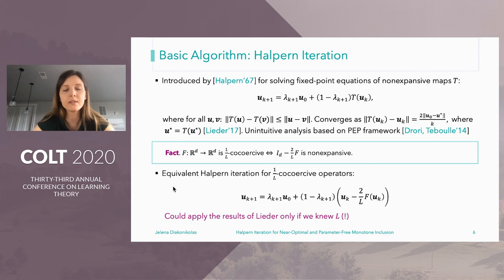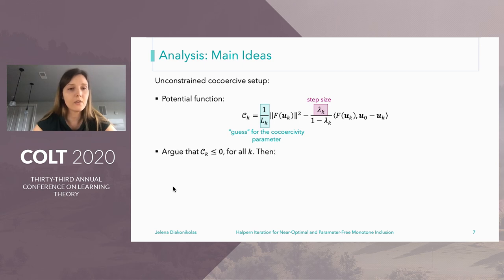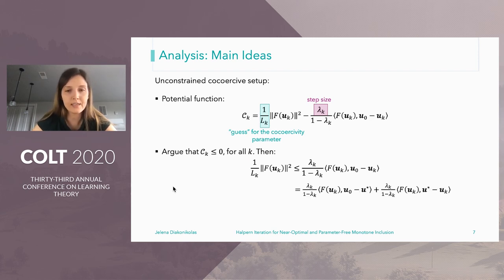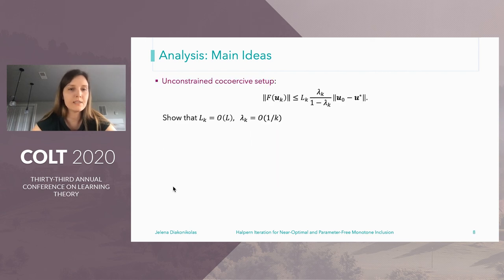To get a parameter-free method, we introduce a new analysis based on a new potential function, where L_k is our current guess in iteration k for the co-coercivity parameter and lambda_k is the step size. The analysis works by arguing that C_k is non-positive for all k. By rearranging C_k ≤ 0 and adding and subtracting u* on the right-hand side, the second expression is non-positive because u* is a weak solution. Applying Cauchy-Schwarz and dividing both sides by the norm of F(u_k), we get a bound that yields 1/k convergence, provided our estimate L_k is not too bad and the step size lambda_k grows as O(1/k).